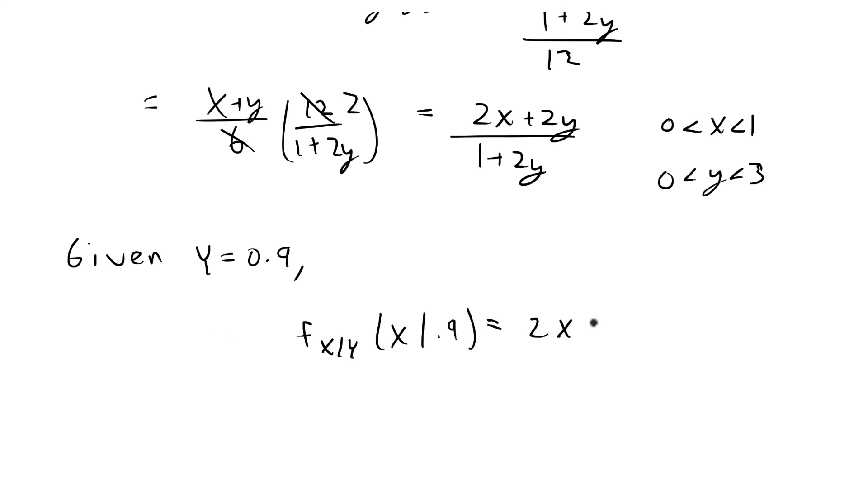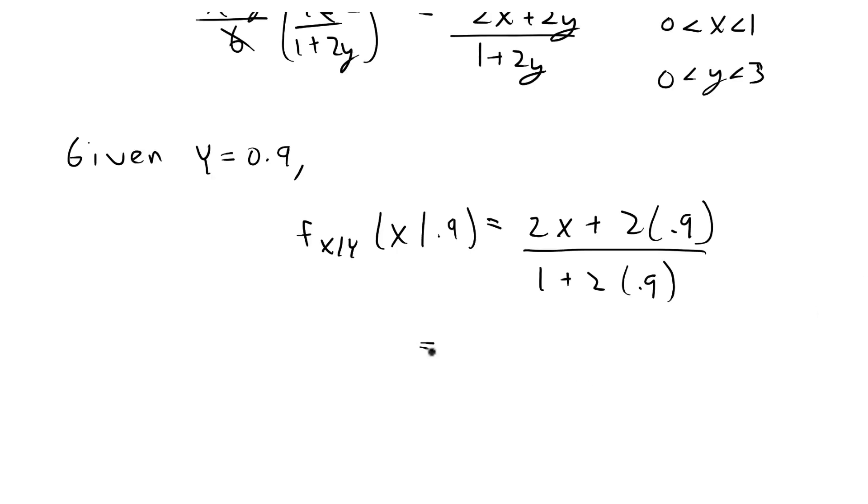It's going to be equal to 2x plus 2 times 0.9 over 1 plus 2 times 0.9. That's going to give me that the conditional is equal to 2x plus 1.8 over 2.8.